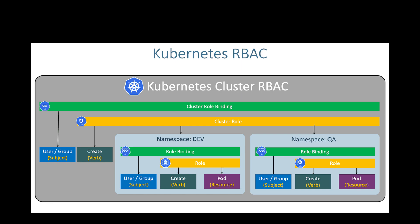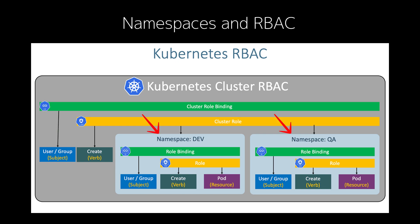Now let's talk about managing resources and access control with namespaces and RBAC. Kubernetes allows you to divide your cluster into multiple namespaces, which is particularly useful when you want to separate different environments such as development, staging, and production, or manage different teams' workloads within the same cluster. Namespaces provide a way to organize resources so they don't clash with one another.